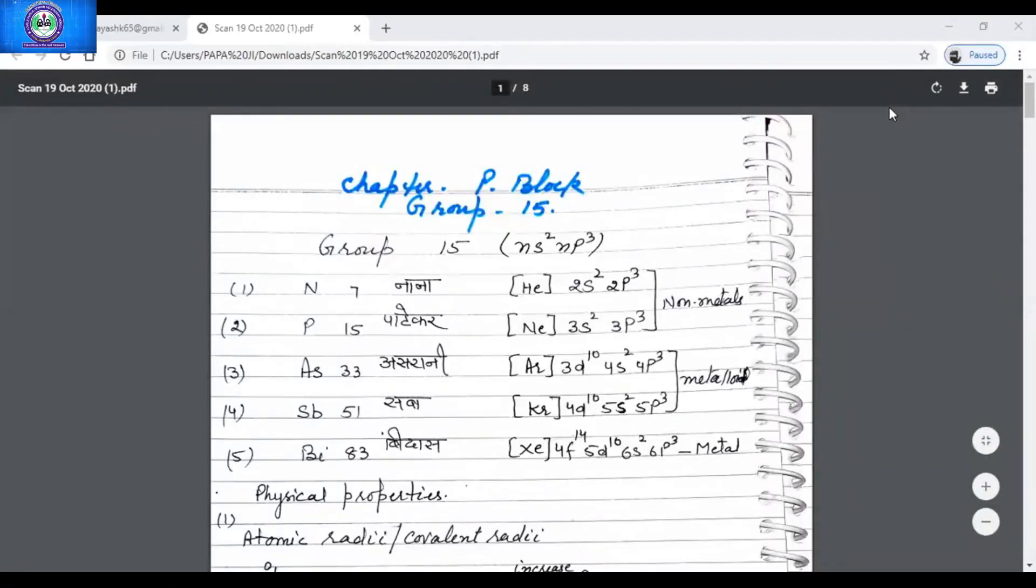Good morning students. Today we shall be studying about P block elements. The P block of the periodic table comprises six groups, that is group 13 to group 18.